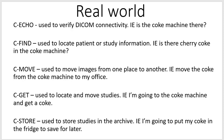To recap: C-ECHO verifies DICOM connectivity — is the coke machine there? C-FIND locates patient or study information — is there cherry coke in the machine? C-MOVE moves images from one place to another — move the coke to my office. C-GET locates and moves studies back to you — go get a coke and bring it back. C-STORE stores studies in the archive — get a coke and put it in the fridge for later. Hopefully that helped you better understand the C-services. Thank you for watching.